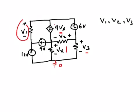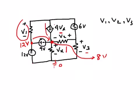Going from the ground to this node, we have a 12-volt rise, so this point is 12 volts. Then from this point to the next point, there is a 4-volt drop, so this point should be 12 minus 4, which is 8 volts. Now this voltage source here shows a drop in the direction of the arrow — it's a voltage drop.